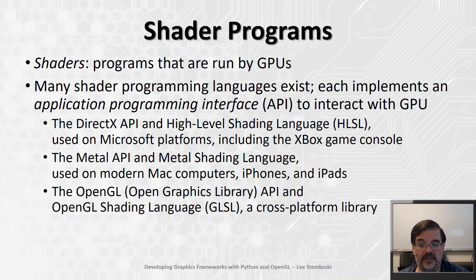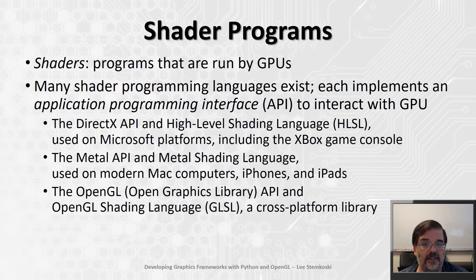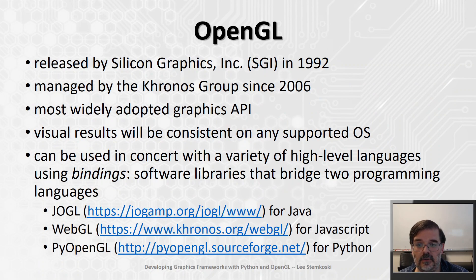Some of the APIs and their corresponding shader languages include: the DirectX API and High-Level Shading Language (HLSL), used on Microsoft platforms including the Xbox console; the Metal API and Metal shading language, used on modern Mac computers, iPhones, and iPads; and the OpenGL, or Open Graphics Library API, and its corresponding OpenGL Shading Language, called GLSL — a cross-platform library that runs on many different operating systems. In this video series, we're going to focus on OpenGL, as it is the most widely adopted graphics API, and its visual results are consistent on any supported operating system.